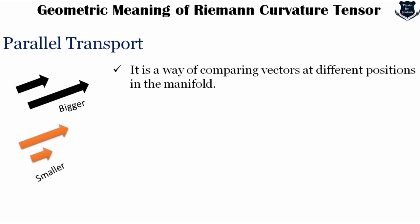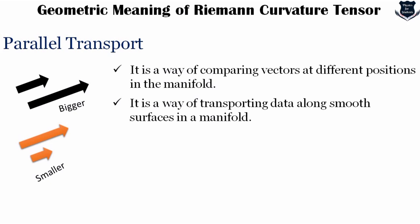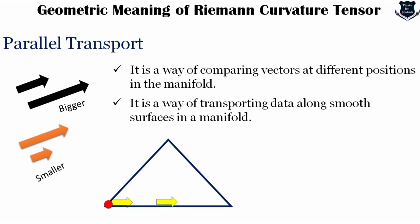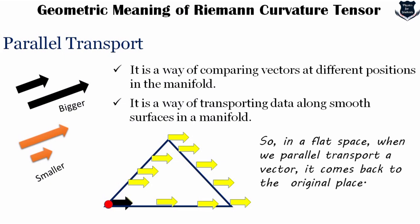Consider an equilateral triangle. Starting at a red point with a yellow vector and moving around the triangle while keeping the orientation the same — going here, further here, then here — when we return, the black arrow and the vector overlap. This means in a flat space when we parallelly transport a vector it comes back to the original orientation. The yellow vector and the red vector overlap each other, confirming successful parallel transport.